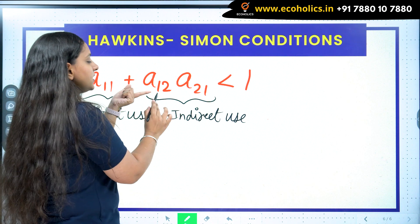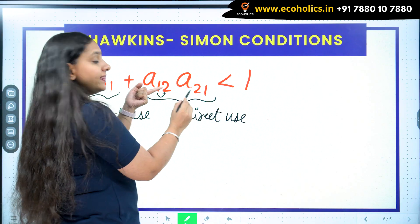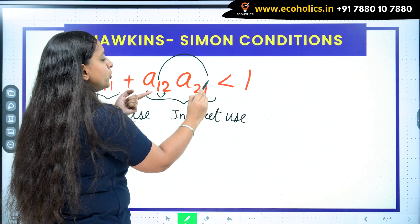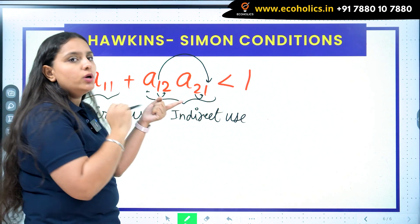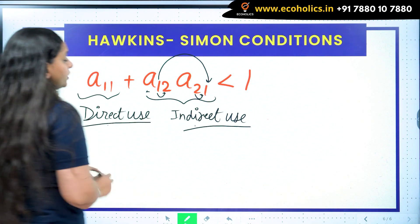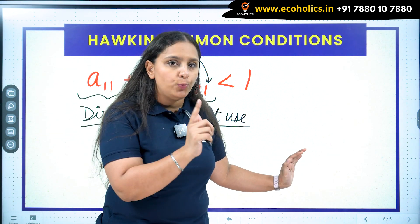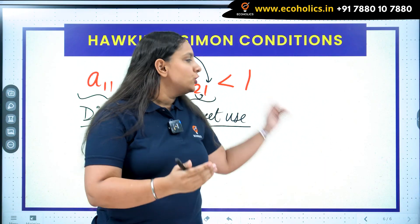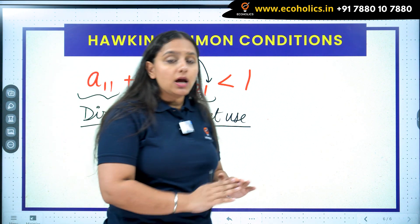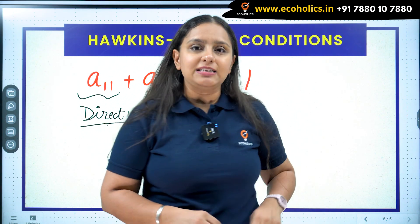Because the first industry is giving their product to second. Now second industry uses that and they produce something which they further give to first. So eventually the first output is coming to first as input but in a different form. So this is the indirect use. This is direct and indirect. So the total of direct and indirect use of first industry's output as input should also be less than 1. The second Hawkins-Simon condition tells us that the direct plus the indirect use of any commodity as an input should also be strictly less than 1.